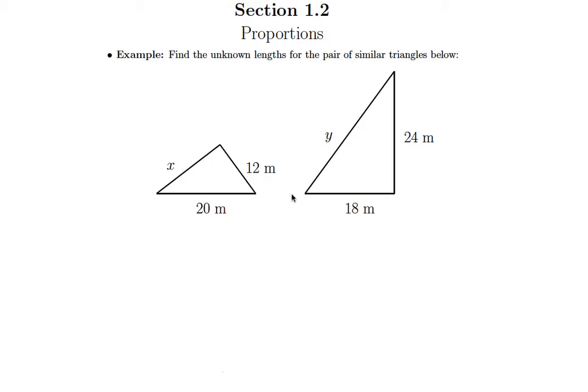The first thing that is challenging about this problem is that I have these two similar triangles, but they're not necessarily oriented the same way. So the first thing we need to do is identify our corresponding sides, because remember that ratios of corresponding sides are equal. That's the whole basis for how we use proportions to solve similar triangles, to find sides of those similar triangles.